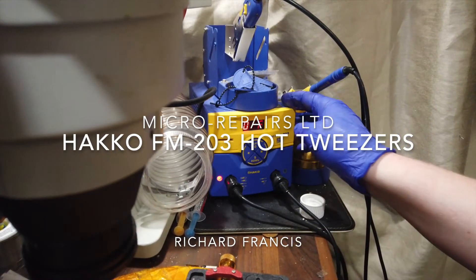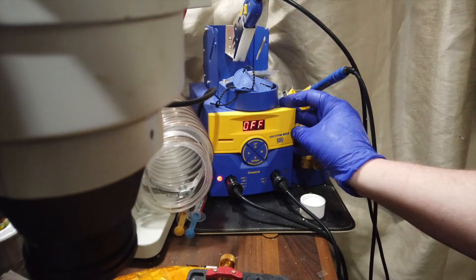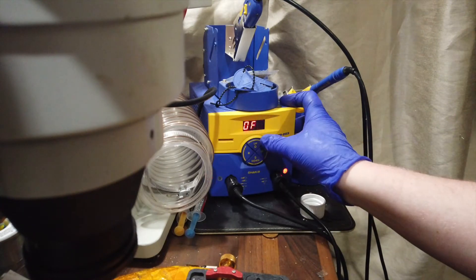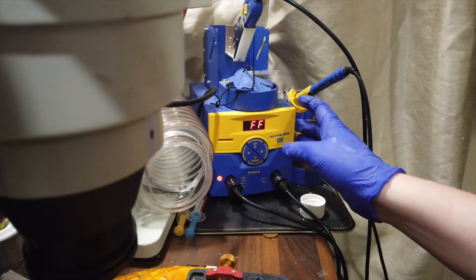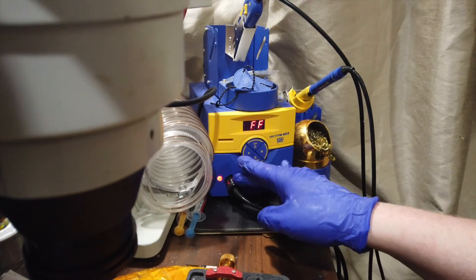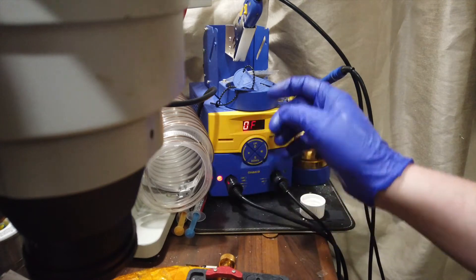Hi, this is the FM203. This is the twin port station made by Hakko. As you can see, it has two ports, which allows you to use two tools at the same time, i.e. an iron and hot tweezers.